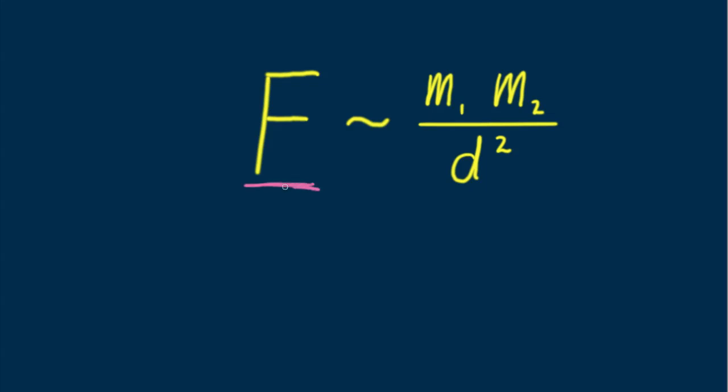The attractive force between two bodies, say of mass m sub 1 and mass m sub 2, is proportional to the product of their masses. The d squared in the denominator tells that the force varies as the inverse square of the distance between the centers of the bodies.